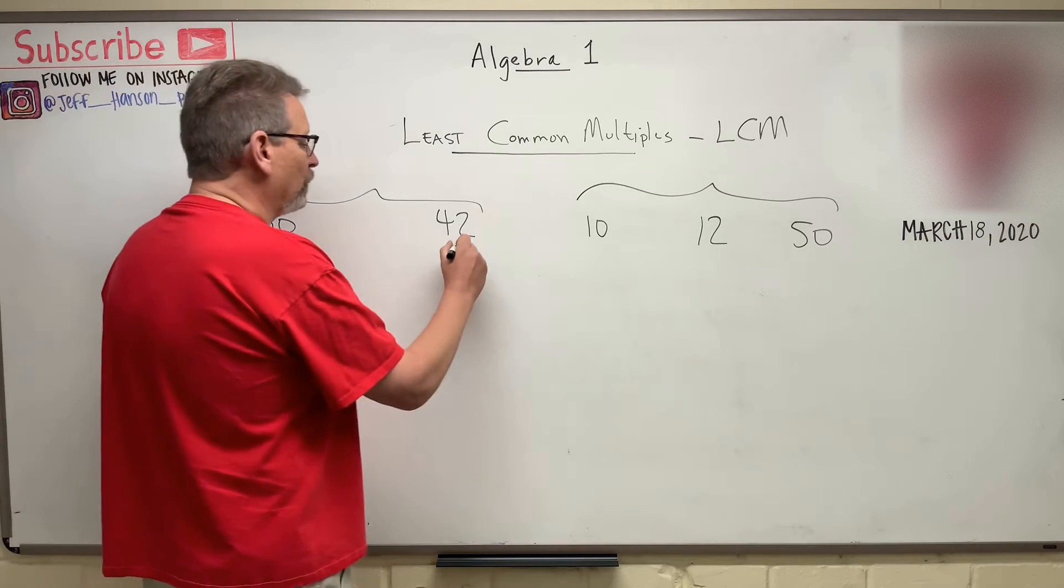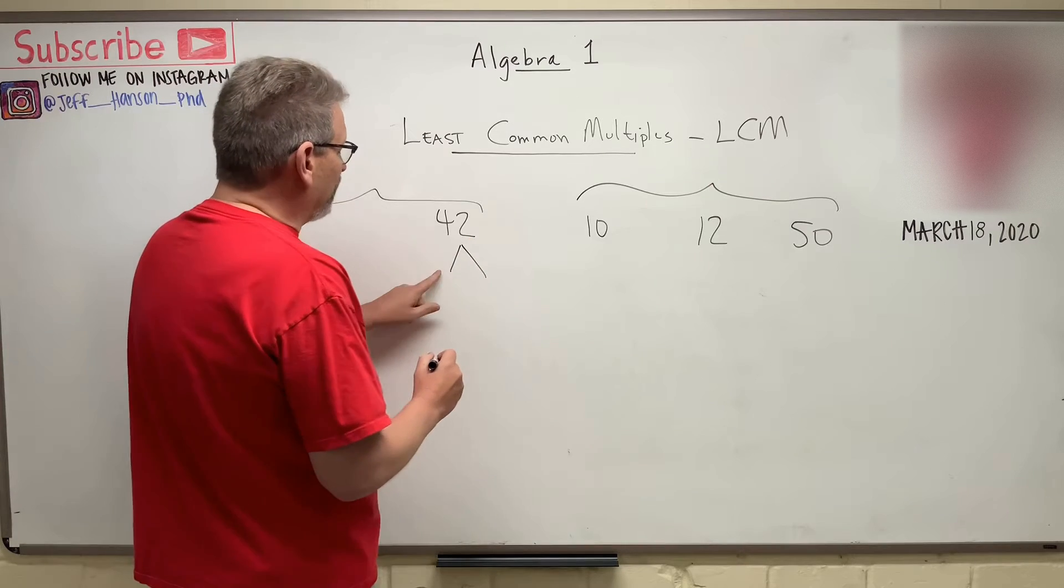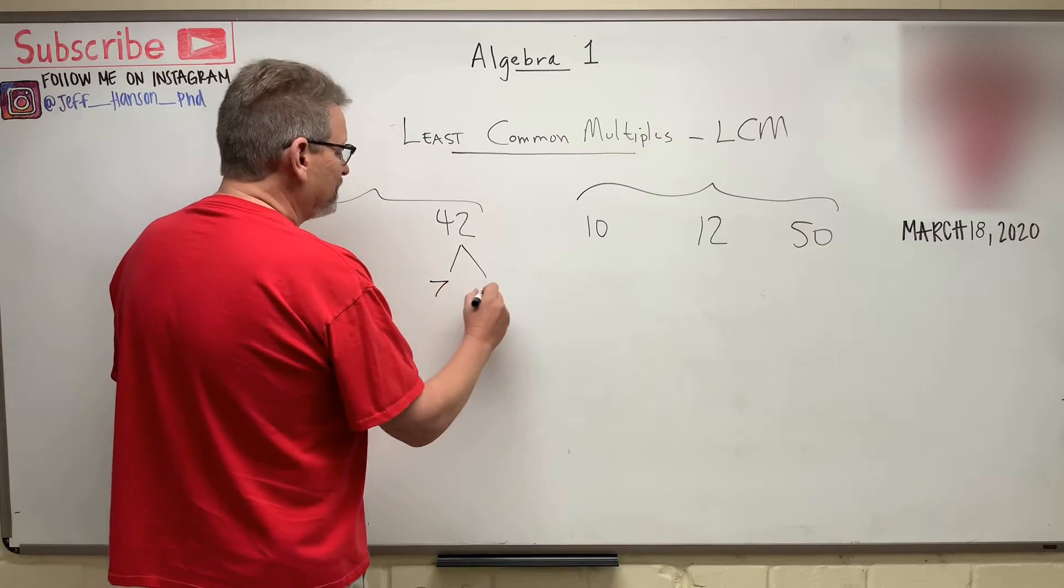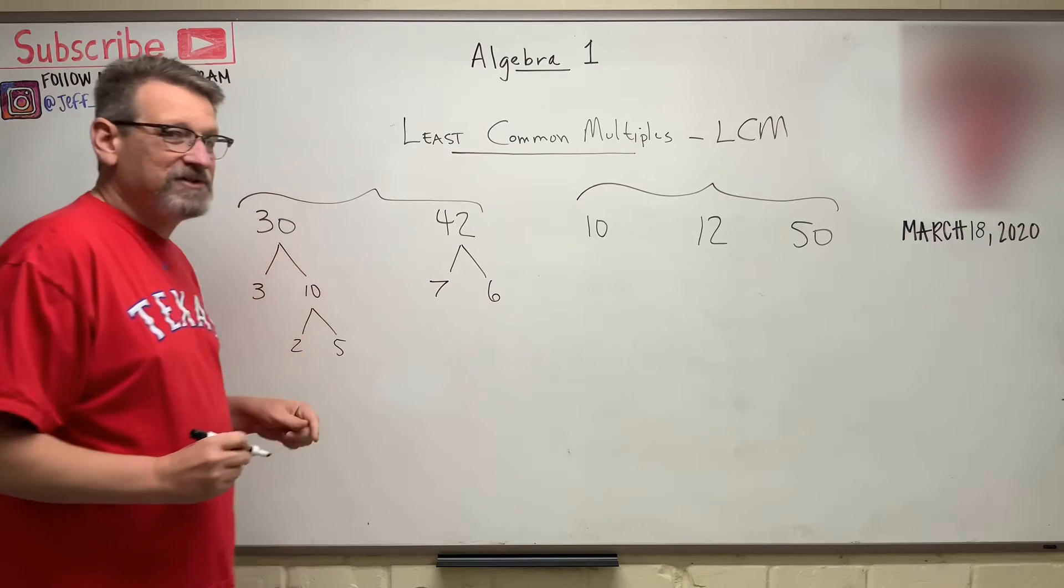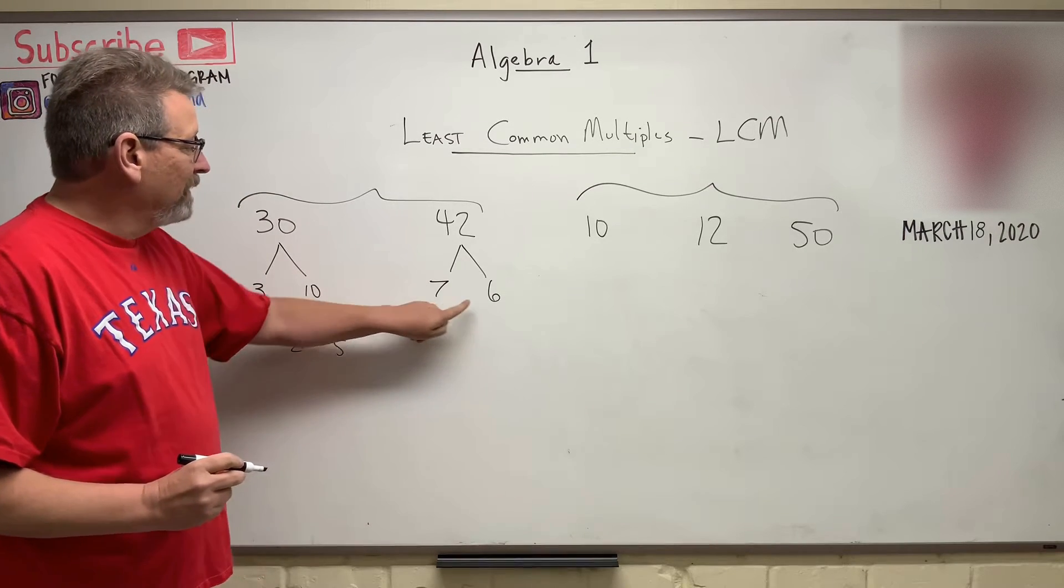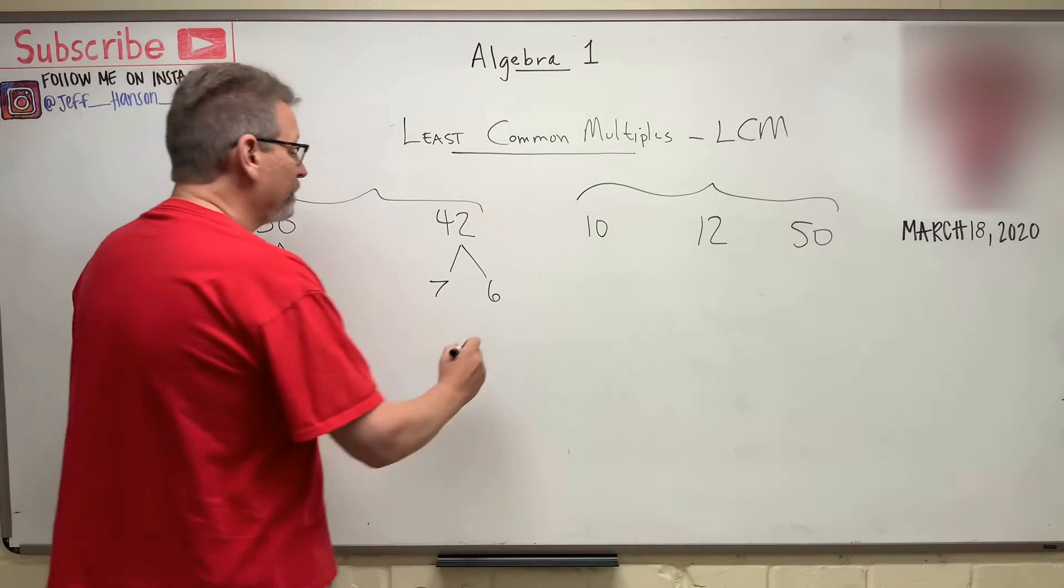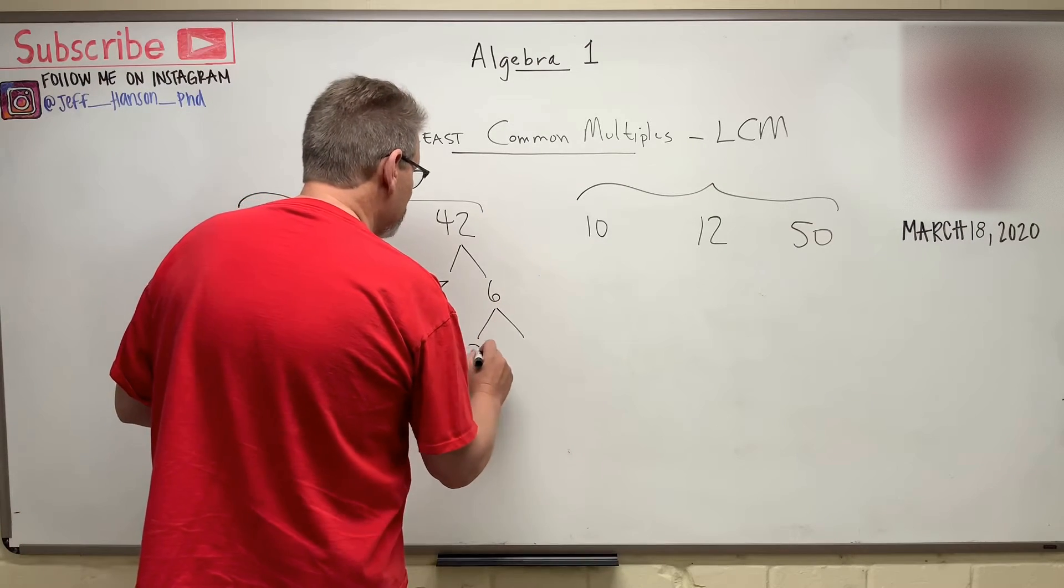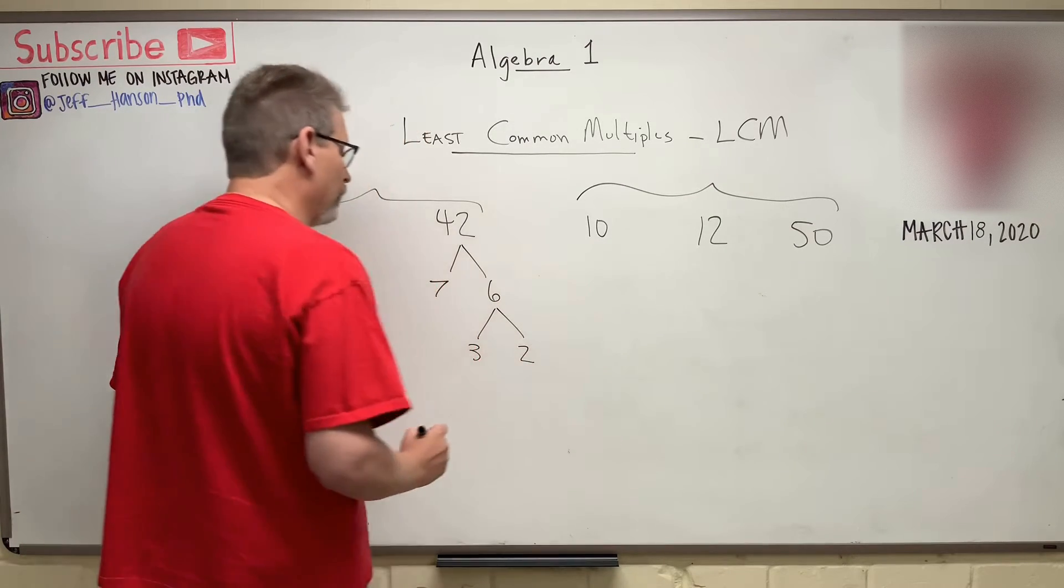Let's factor 42. 42, I think, is 7 times 6. That's prime, but 6 is factorable. So again, it's 3 times 2.